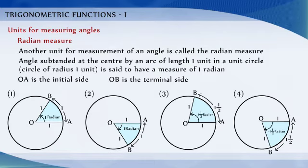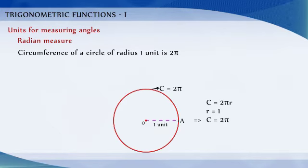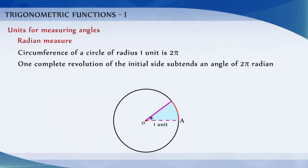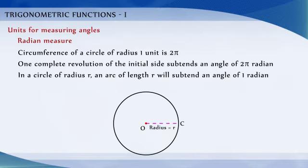We know that the circumference of a circle of radius 1 unit is 2π. Thus, one complete revolution of the initial side subtends an angle of 2π radian. More generally, in a circle of radius r, an arc of length r will subtend an angle of 1 radian.